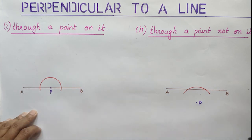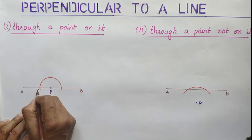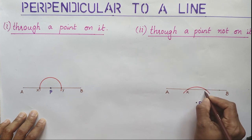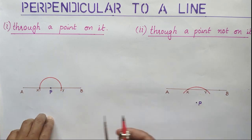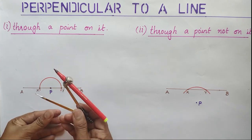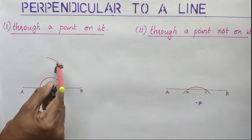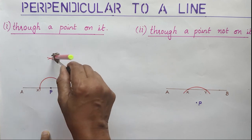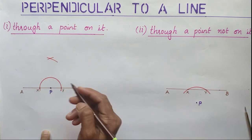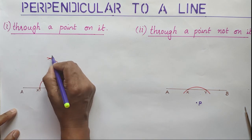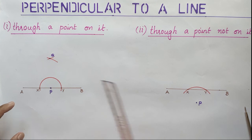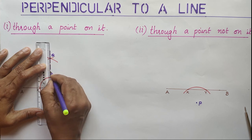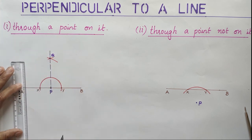This point is X and this point is Y — in both cases I am using the same names X and Y. Next, place the metal tip on X and draw an arc. Without changing the compass, place the metal tip on Y and draw another arc. The crossing point is Q. Join P and Q — we will get the perpendicular.